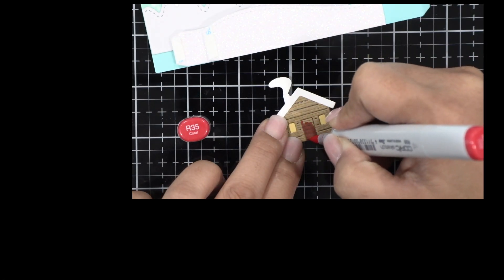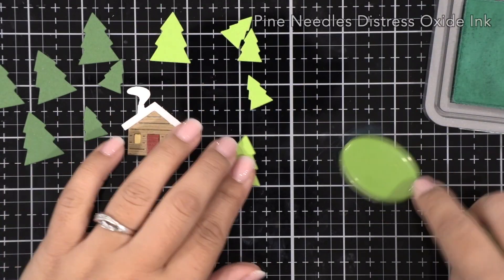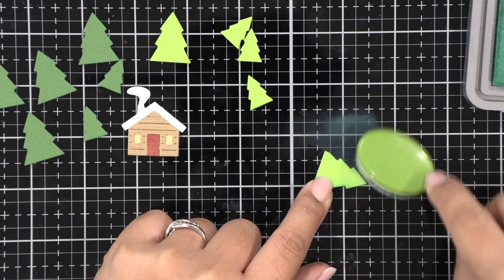I felt like this door needed to be red so I'm just going to quickly color it with R35 and then moving on to these spruce trees I've die cut from noble fir and cilantro cardstock.